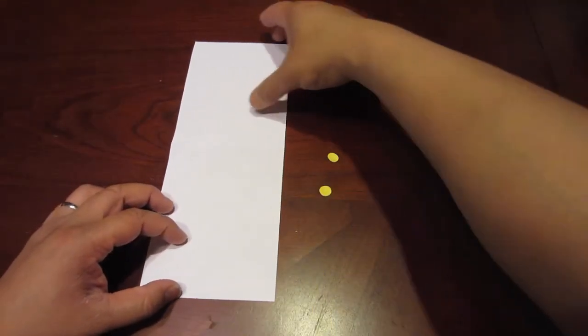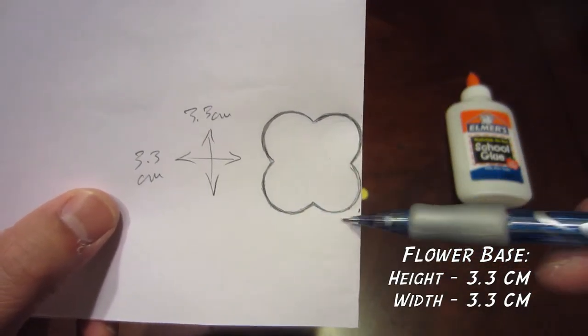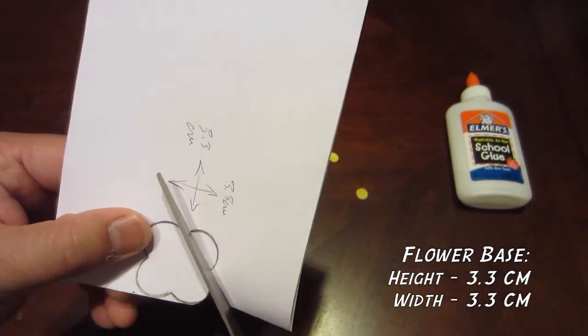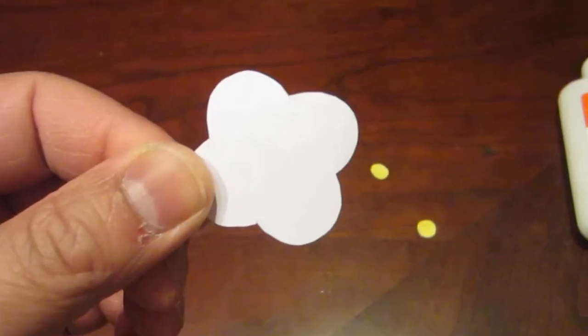Next, take your white strip of paper and fold it in half. Then draw a flower outline like this on one side of the fold. Measurements are posted. When ready, start cutting out. When done, this is what you should have.